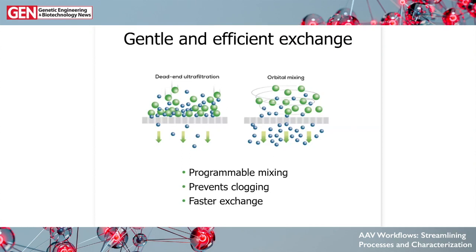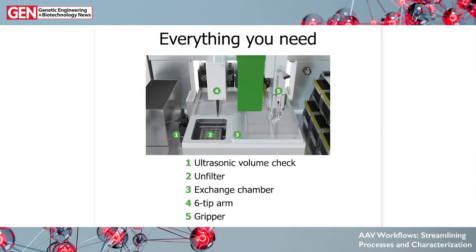The key secret sauce of BigTuna is the gentle and efficient exchange happening with positive pressure combined with orbital mixing, so things don't collect at the membrane. The AAV you want to keep in solution stays well-mixed and doesn't start aggregating as your sample concentration gets higher. BigTuna does this on an automated platform with an ultrasonic volume check, the unfilter inside an exchange chamber that closes to provide a positive pressure environment, a six-tip arm for pipetting buffers, and a gripper for moving plates.